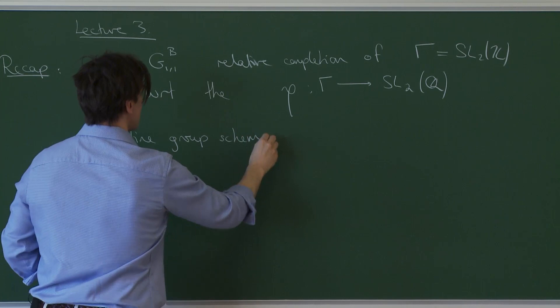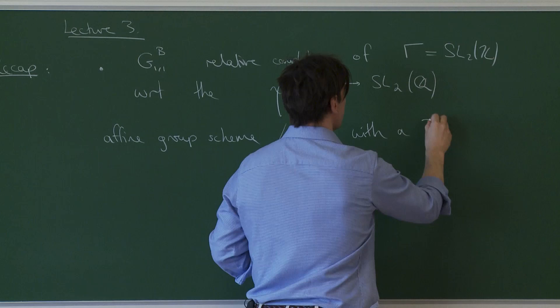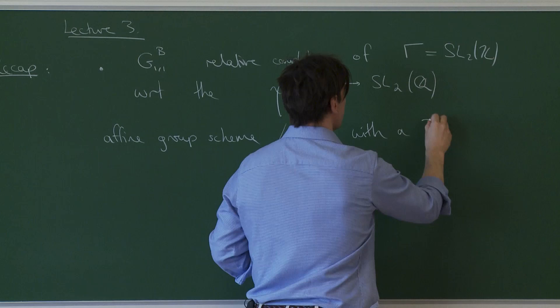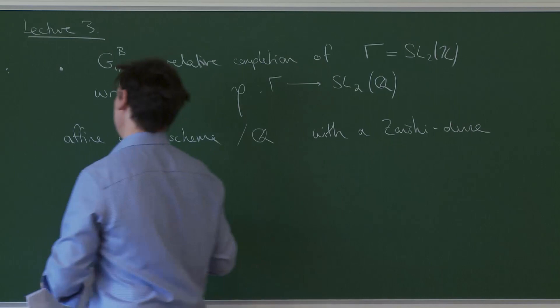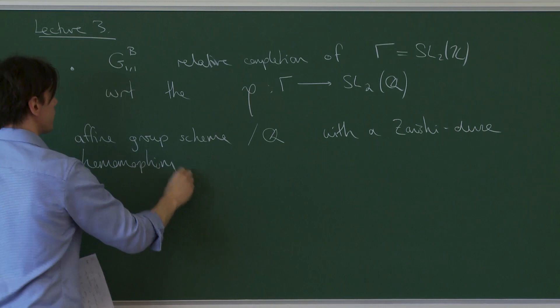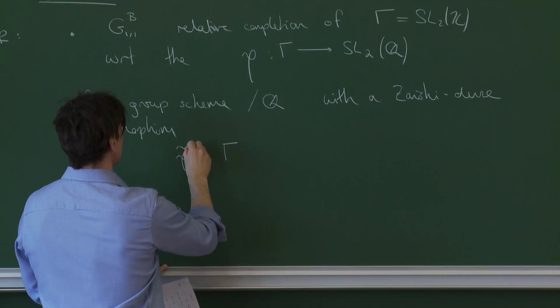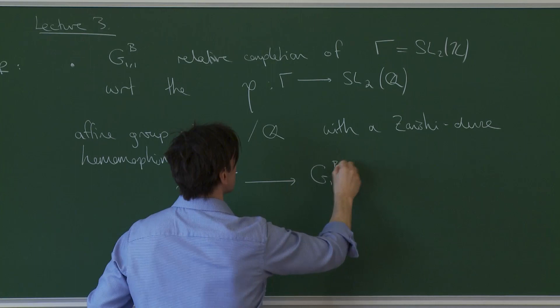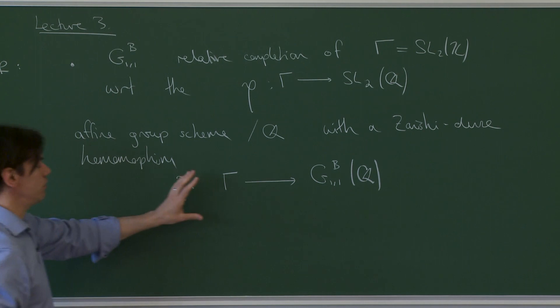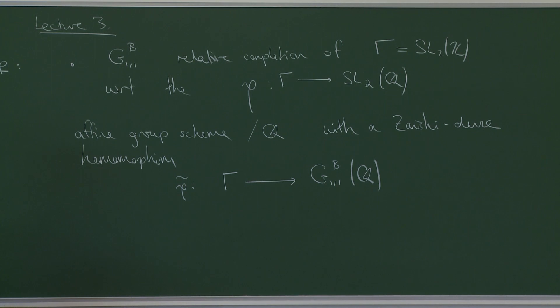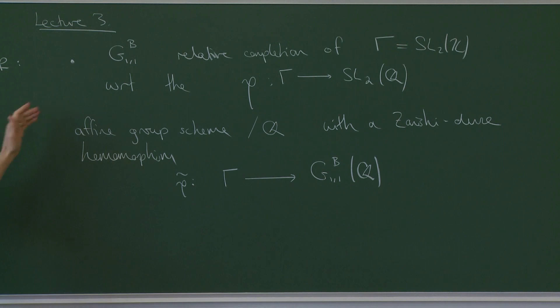It's a pro-algebraic matrix group, or projective limit of algebraic matrix groups over Q, and it is equipped with a Zariski-dense homomorphism, which I'll call rho-tilde, from gamma into its rational points. So we think of this group as some sort of algebraic hull or algebraic envelope of SL2(Z). Of course, an affine group scheme is just determined by its affine ring, which is simply a commutative Hopf algebra.